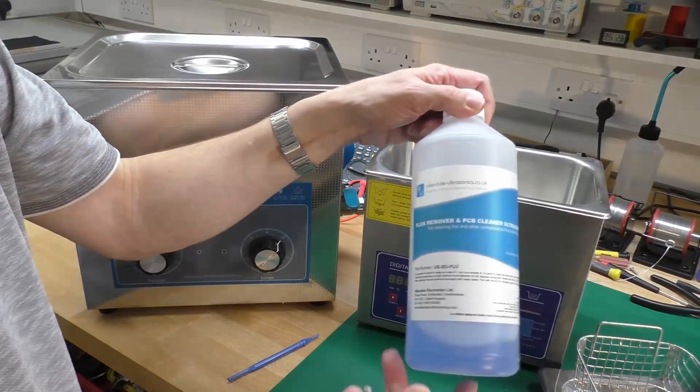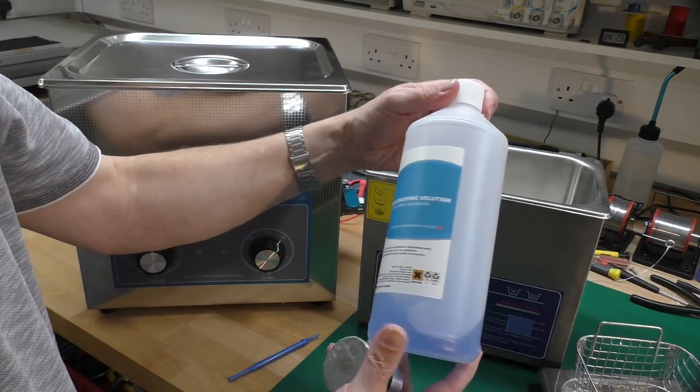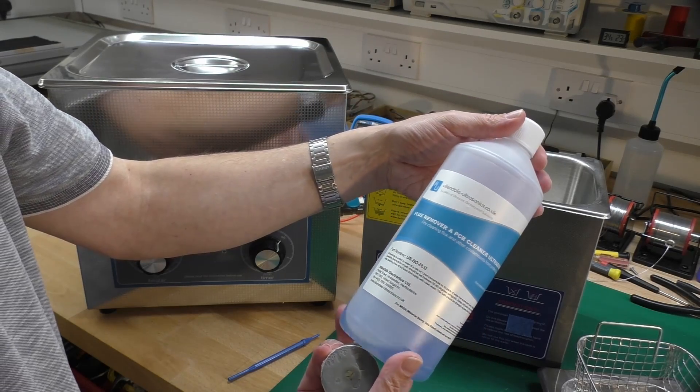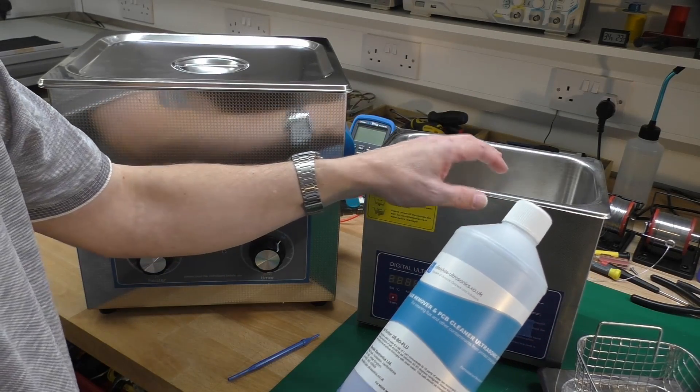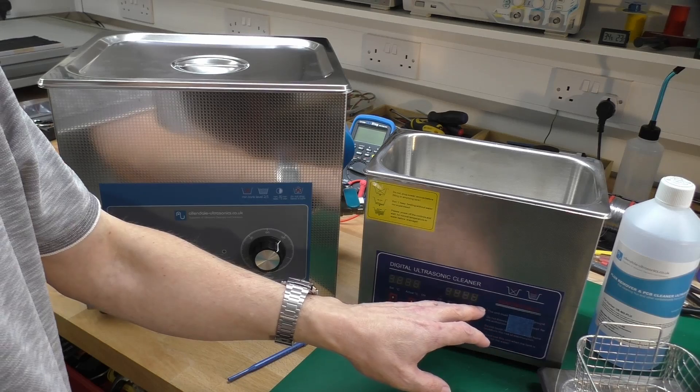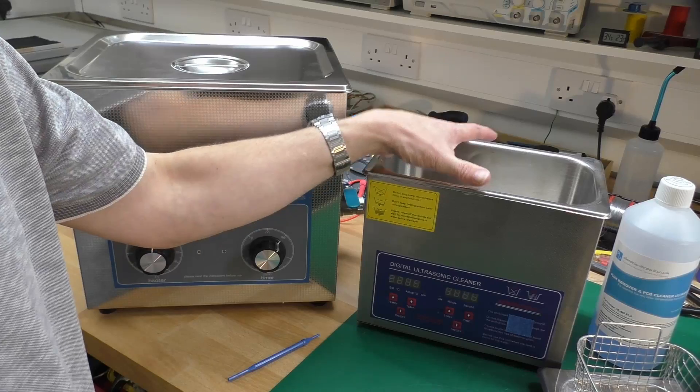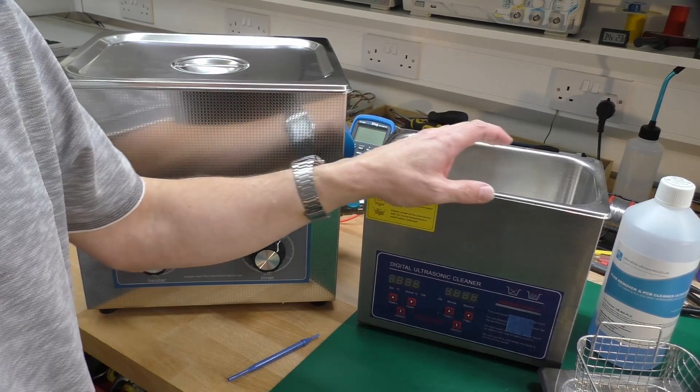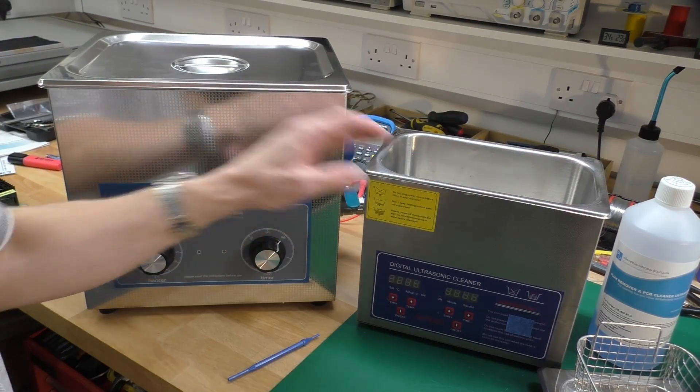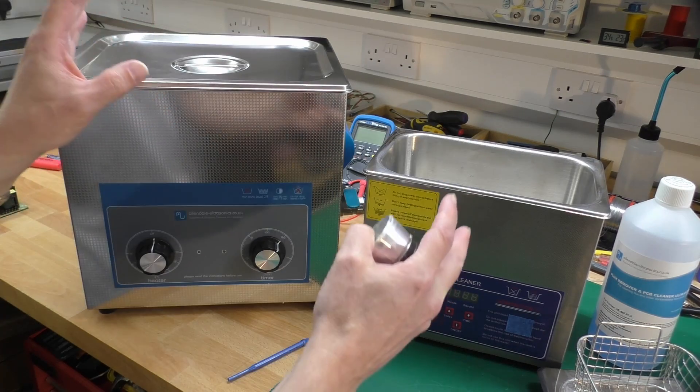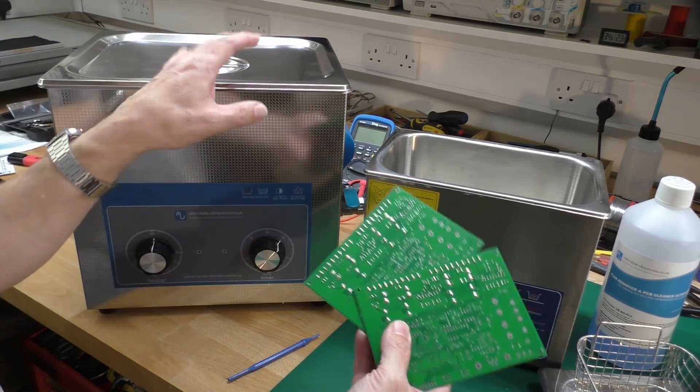Nowadays you can't get the likes of freon, so now we have to use things like this - the flux remover and PCB cleaner solutions. It's basically a soap that you would add in a one to ten ratio with deionized water into the tank. Combined with a heater running at maybe 50-60 degrees C and the ultrasonic cleaner, it will clean flux off boards. It might take a little bit longer than the old freon days, but it does work. I've got the same cleaner solution here and deionized water. I'm going to run a test - put the same solutions into both tanks with my two circuit boards and see how they both work out.